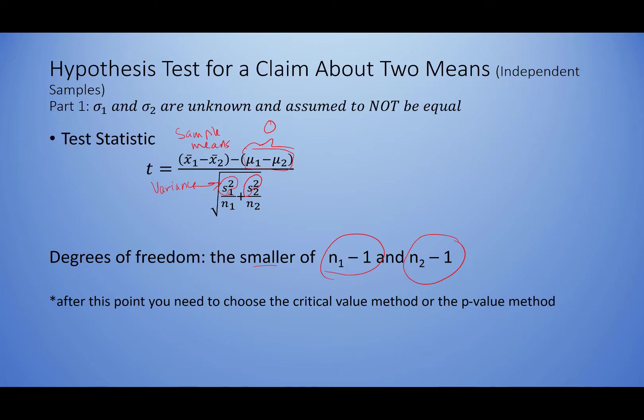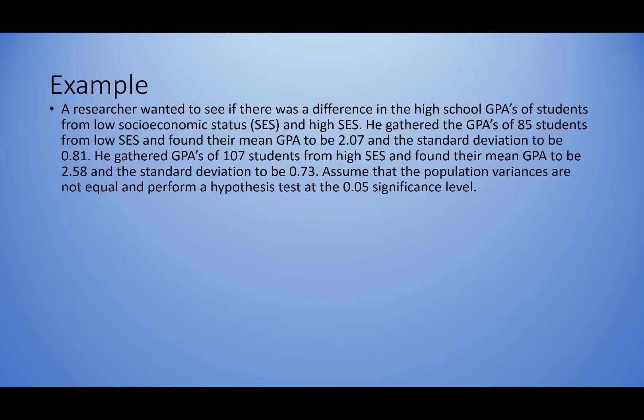Once you get to that point, you choose the critical value method or the p-value method to complete your hypothesis test. Here is our example: a researcher wanted to see if there was a difference in the high school GPAs of students from low socioeconomic status (SES) and high SES.